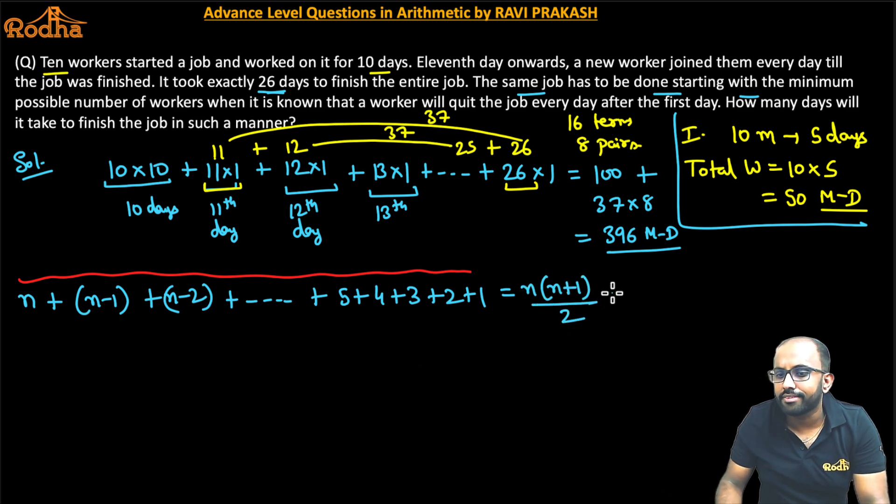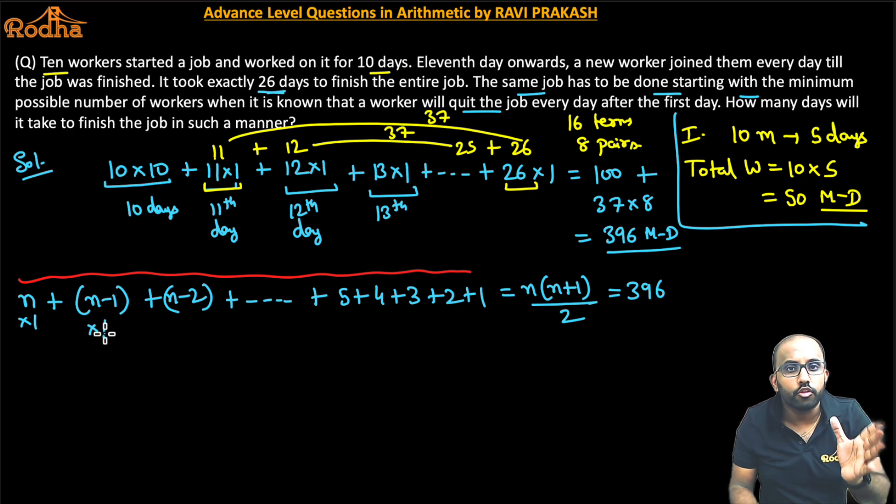And this is somewhere given as 396 man-days. Because this is why n worker has worked for 1 day. So n into 1, n man-days is working. N minus 1 worker next day. A worker will quit the job. So next day, n minus 1 worker has worked for 1 day. N minus 1 man-day. Then n minus 2 man-day.